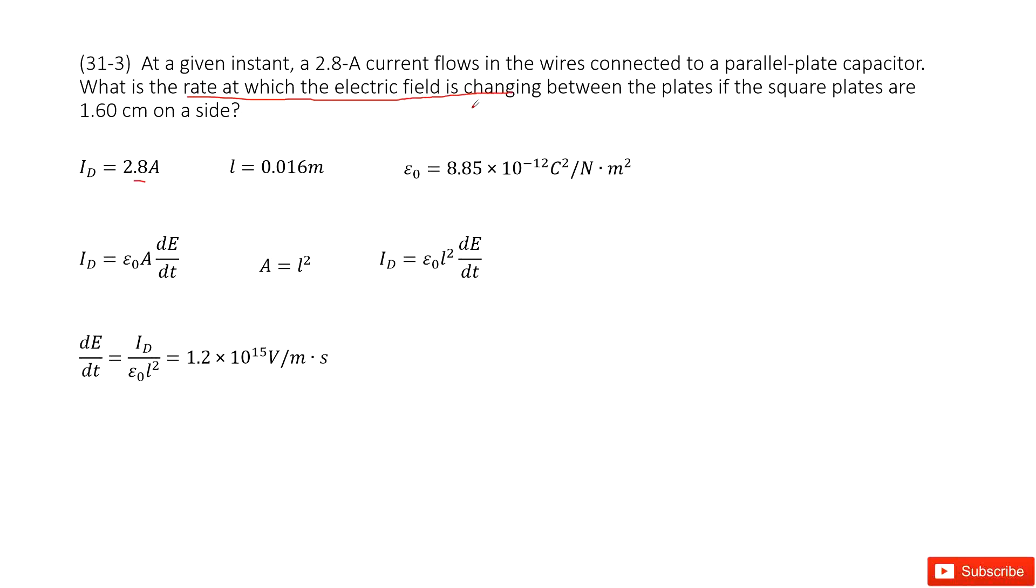And this is called dE over dt. And then, how can you write down the equation between ID and electric field changing rate?